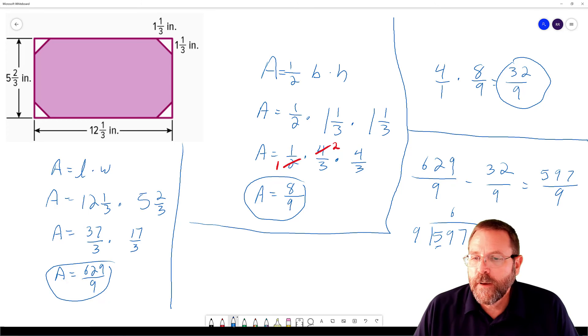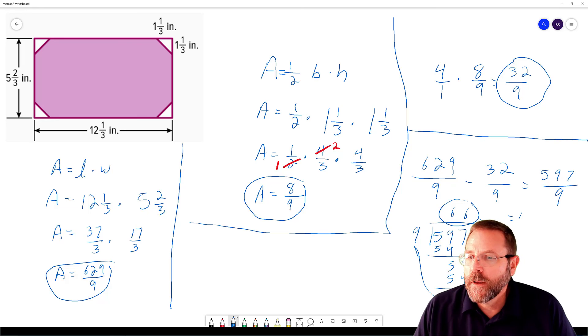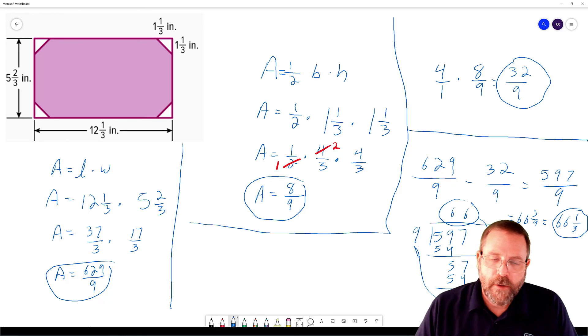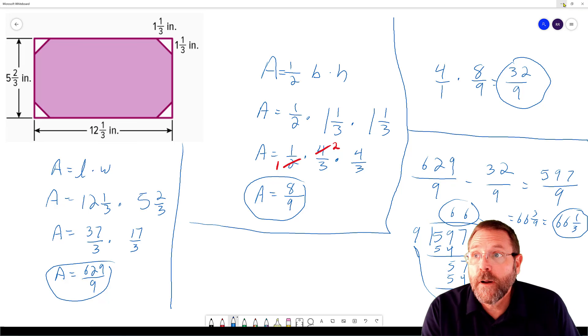9 goes into that 6 times, which is 54, at least 5 left over, bring down the 7. It's going to be 6 again, which is 54 again with 3 left over. 66 and 3/9ths. So we get 66 and 3/9ths, also known as 66 and 1/3, which would be our final answer for that rather complicated problem.